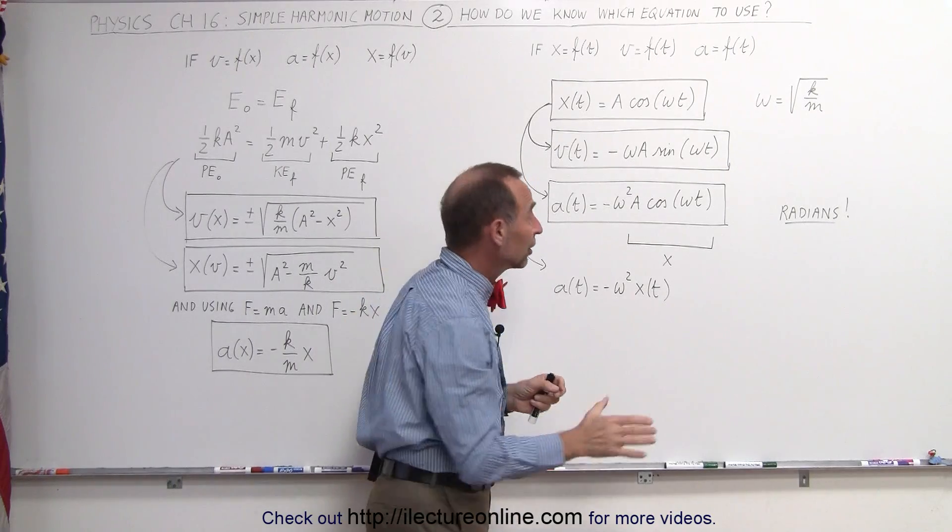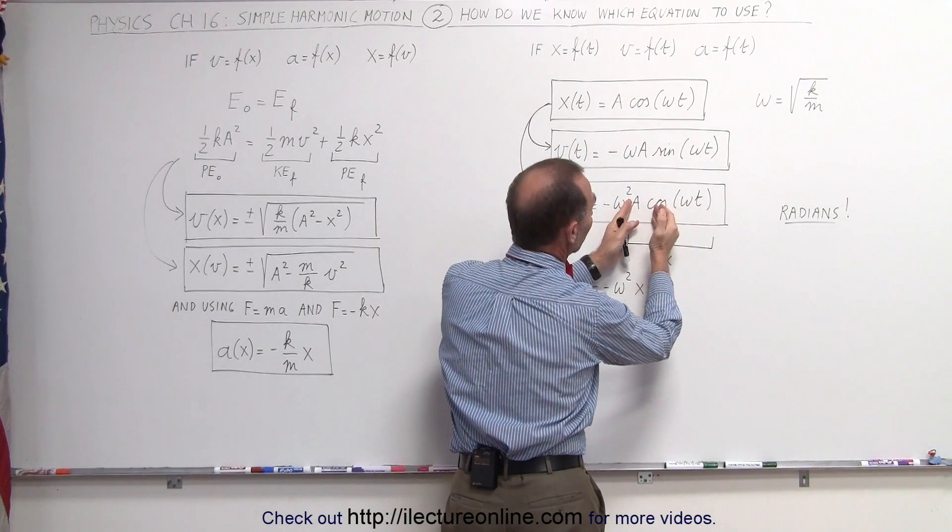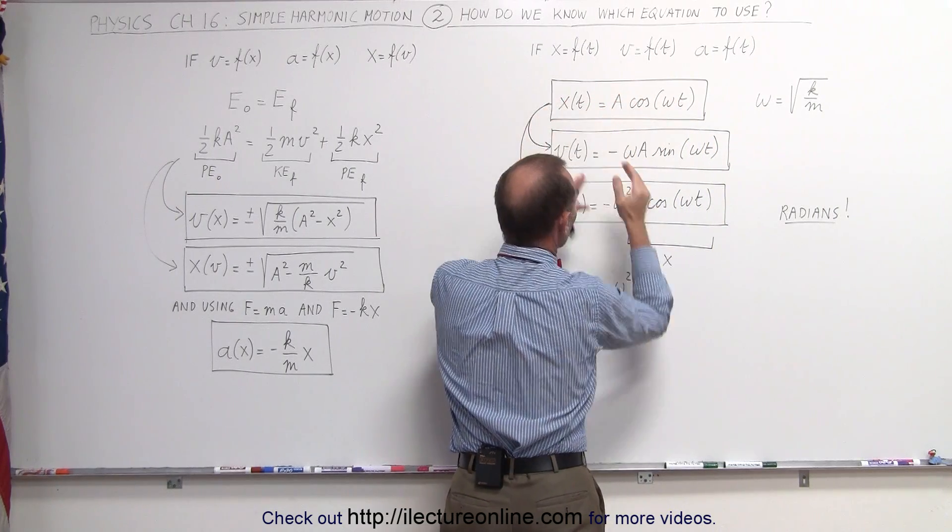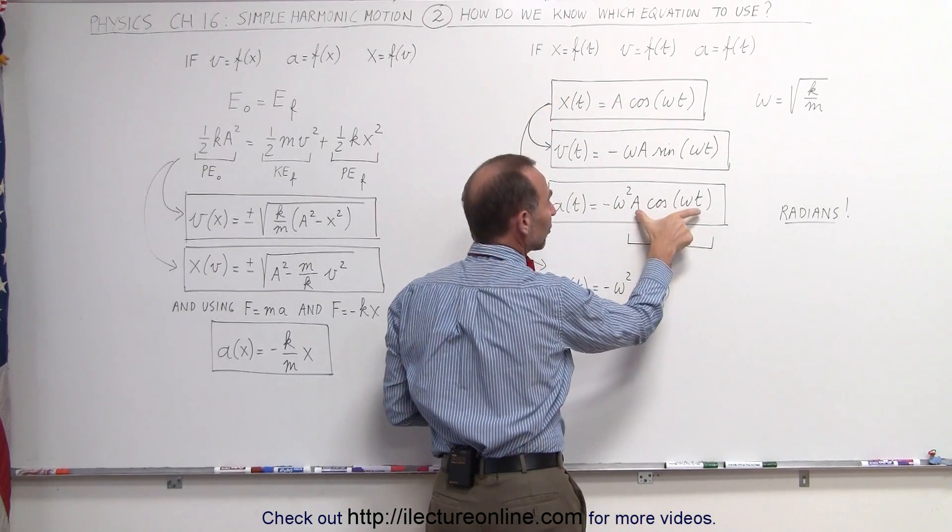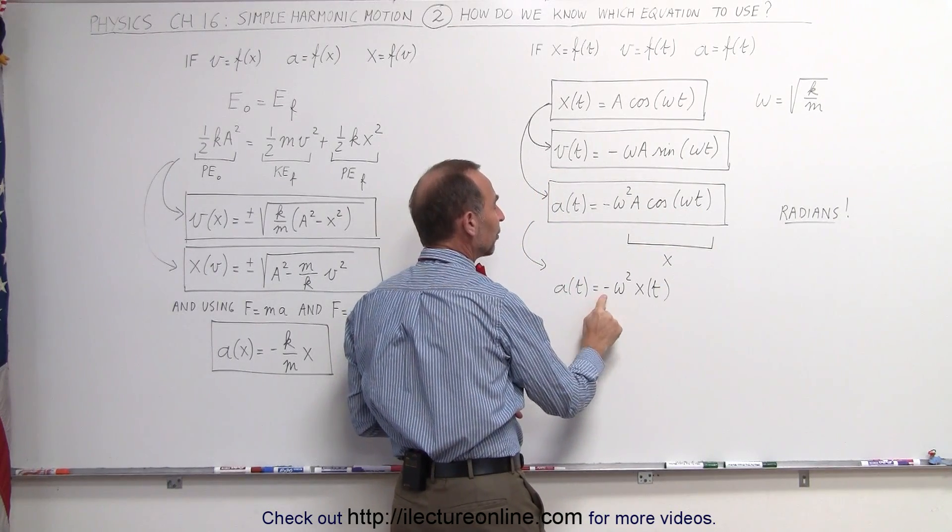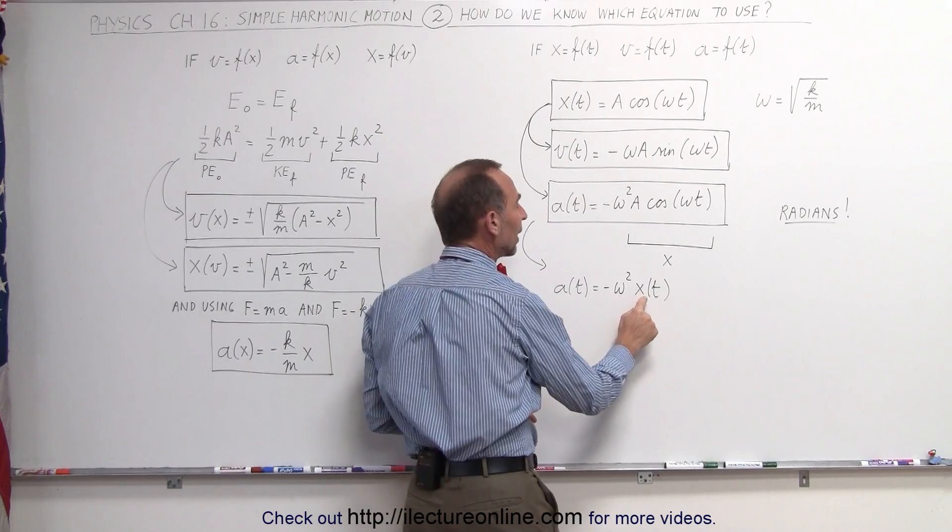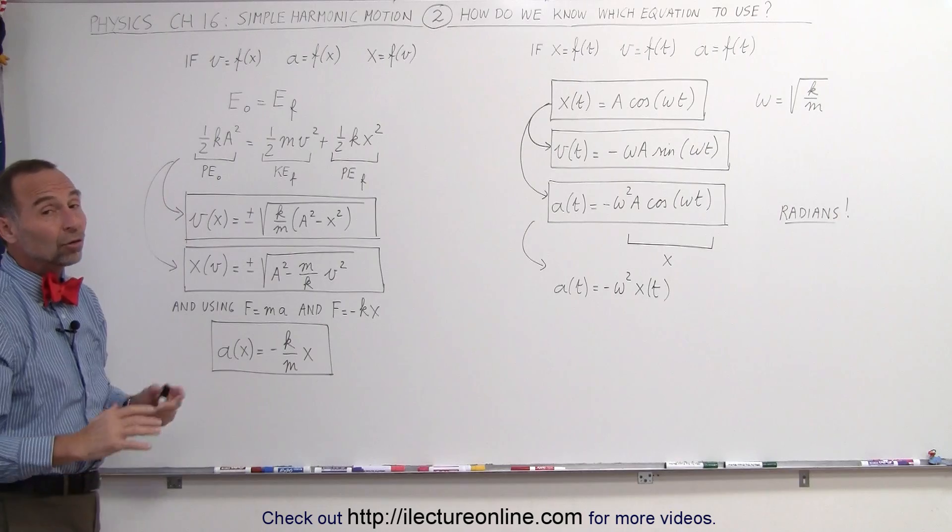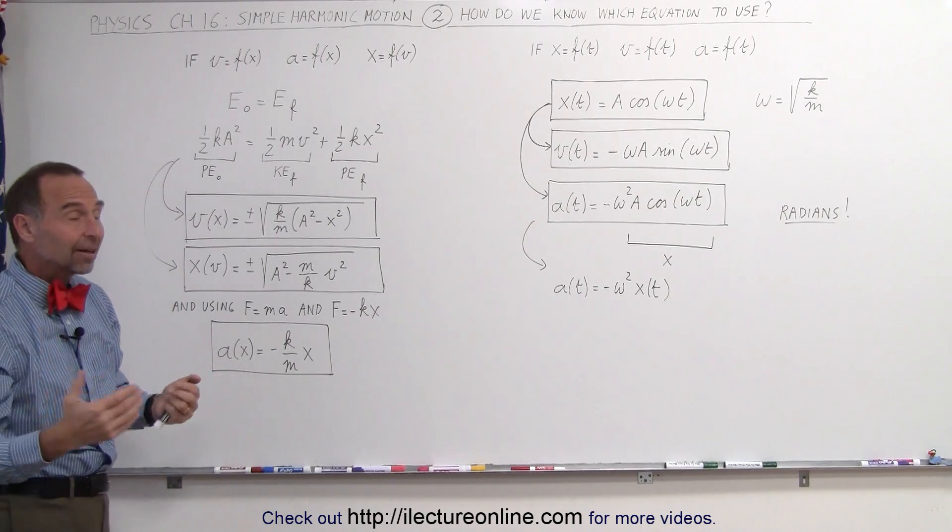And if you then take a look at this equation right here, this portion, a times the cosine of omega t is equal to this, which is basically the position as a function of time. So when we replace all of this by x, we can write the acceleration as a function of time as being minus omega squared times x. And if you then look over here, that's actually the exact same equation that we have here. So it is the same concept.